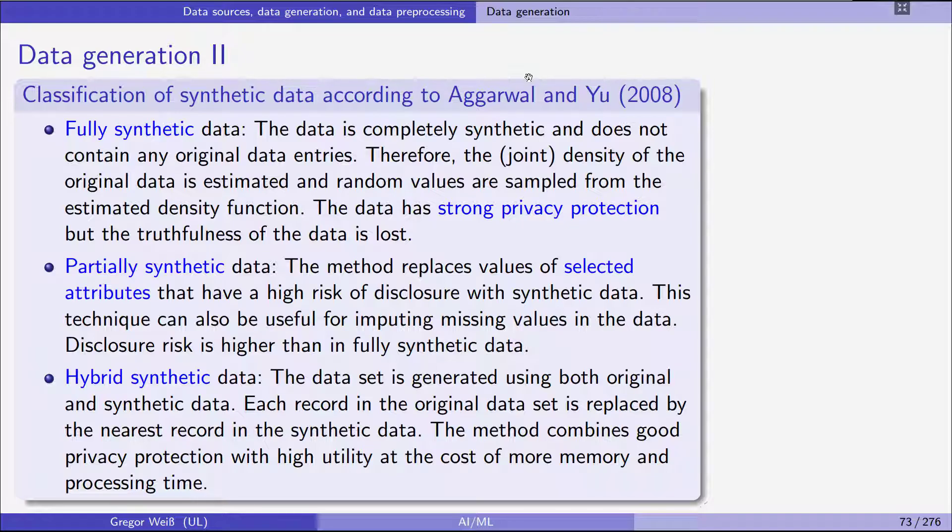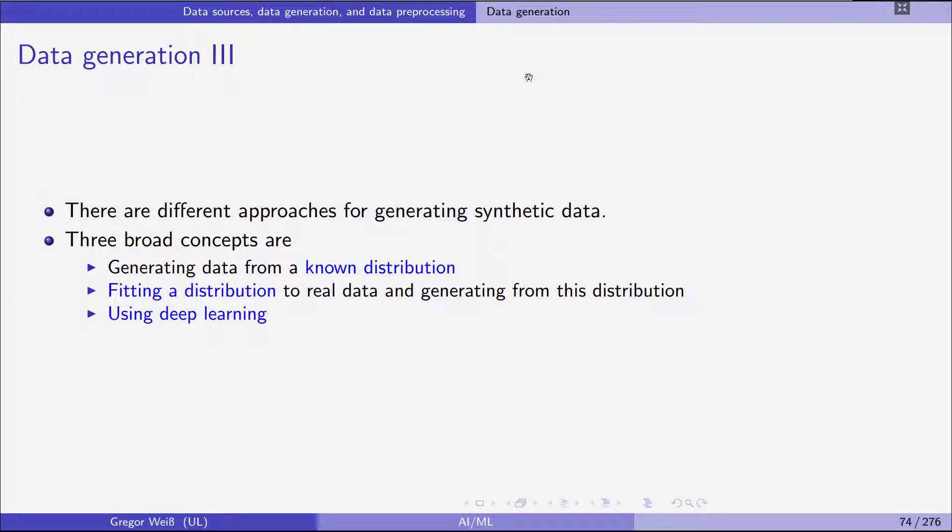And then we have hybrid synthetic data, that is, the data set is generated using both original and synthetic data. Now, each record in the original data is replaced by the nearest record in the synthetic data. So you simulate from a fitted distribution, but you try to replace the original data by synthetic data that is closest to the original observation. And this method combines good privacy protection with high utility at the cost of more memory and processing time. Obviously, this takes longer, but on a modern computer, this shouldn't take too long.